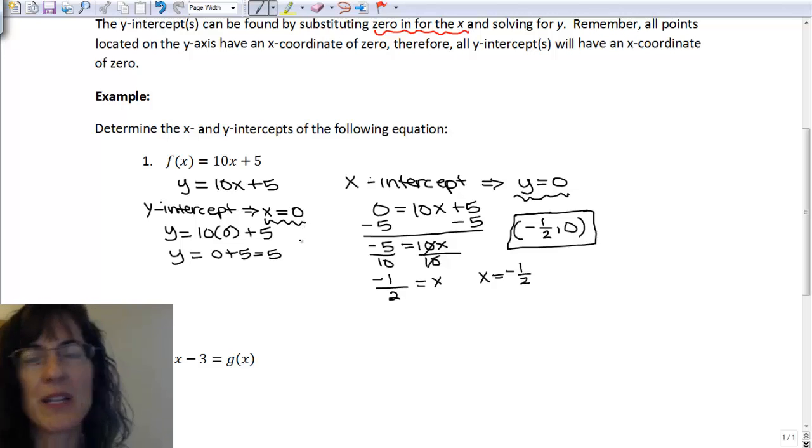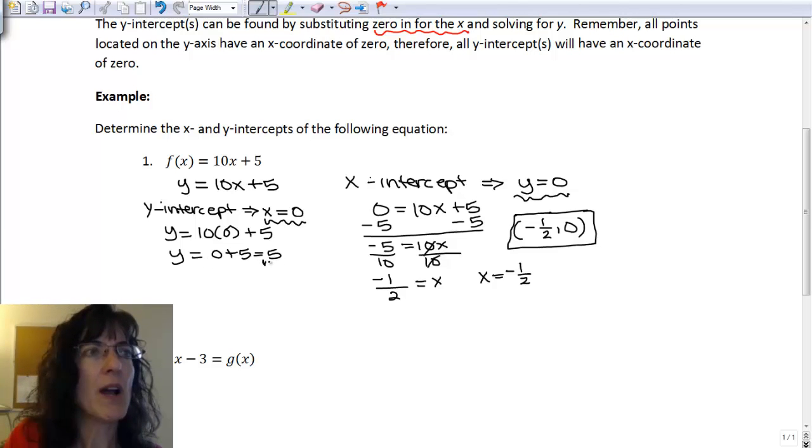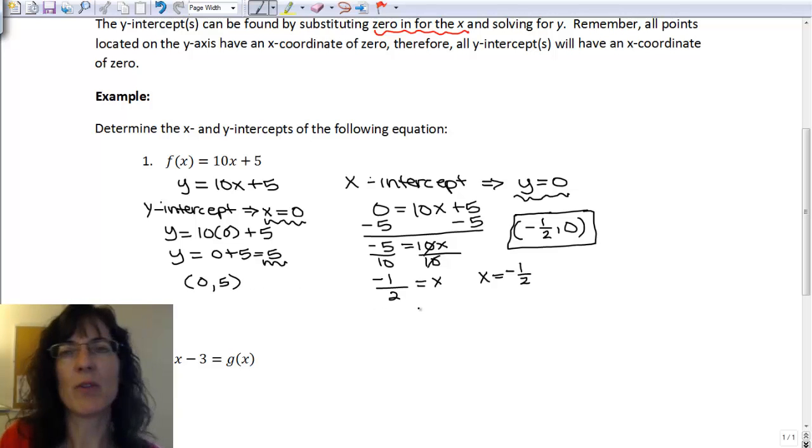So remember I already know my x part is 0, because that's what I started with and plugged in. And my y part is 5, so I can write an ordered pair, 0 for the x part, 5 for the y part.